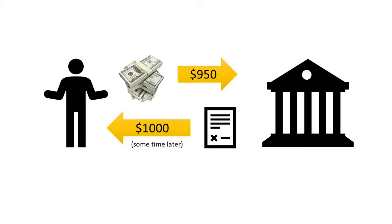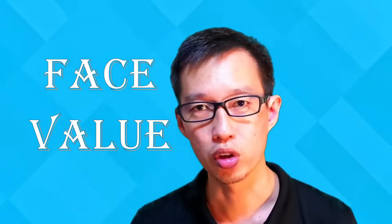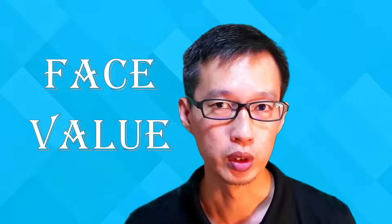Imagine you're going to lend the government $950. In return for taking your $950, the government will give you a bond. The bond is basically a promise by the government to say that they're going to pay you back not only $950 — they're going to pay you back, for example, $1000. This amount of money that you get back, this $1000, is known as the face value.